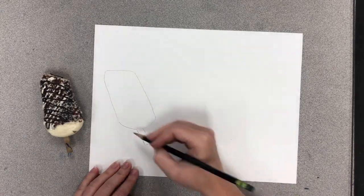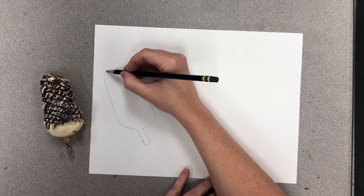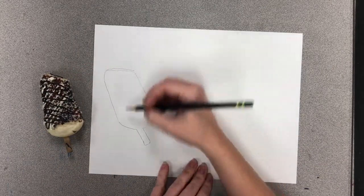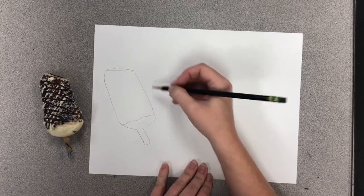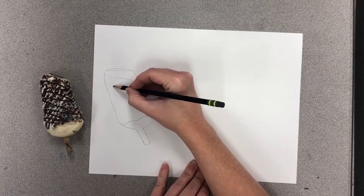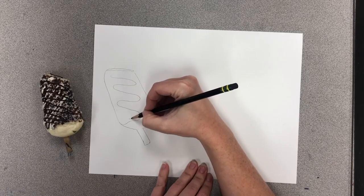So now I've got my contour or my outline, then I can come back in here and add some of the detail. So it's got some chocolate sauce, yum yum yum, got some drizzle on it.